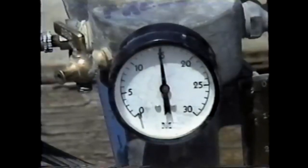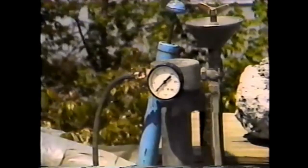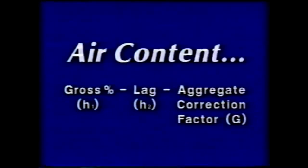Now the resulting water level is read at the bottom of the meniscus on the graduated scale. This value is the gross percentage of air entrained in the concrete, or H sub 1. Then the pressure is released, and the water level on the graduated scale is read. This value is the lag, or H sub 2. The air content of the concrete is the gross percentage H sub 1, minus the lag H sub 2, minus an aggregate correction factor G.